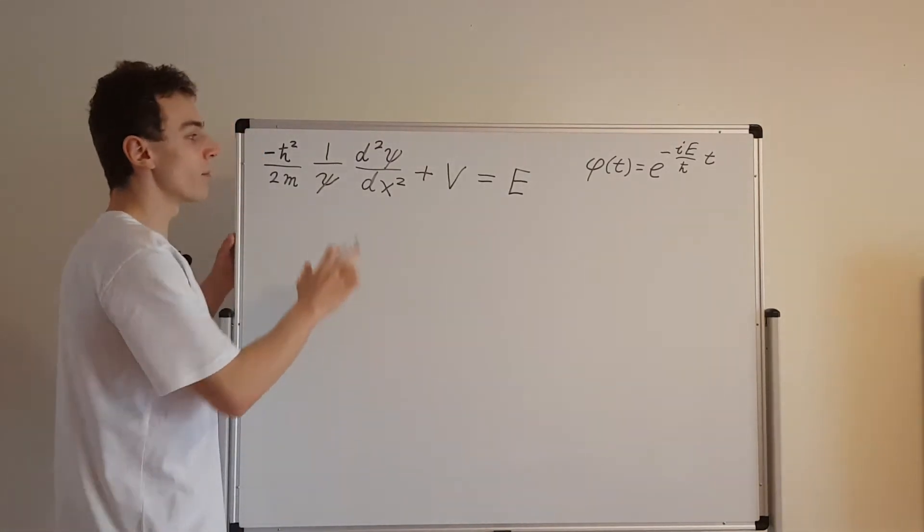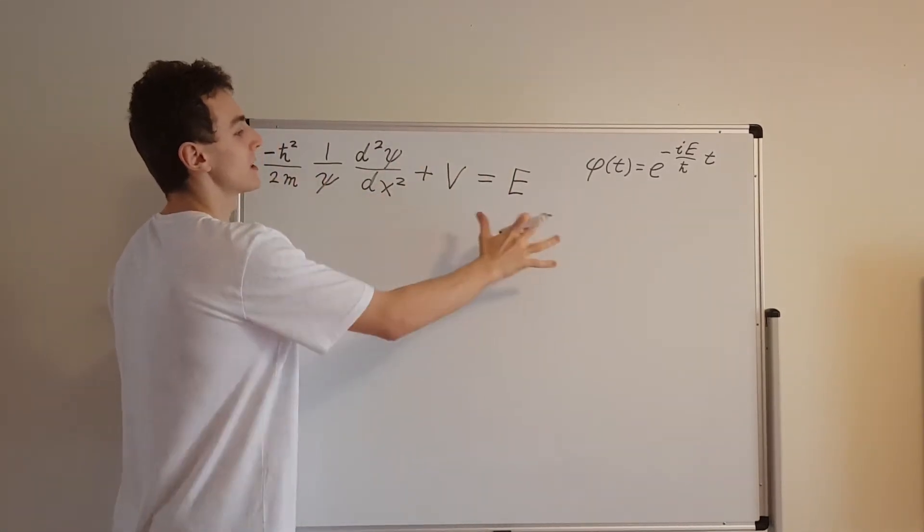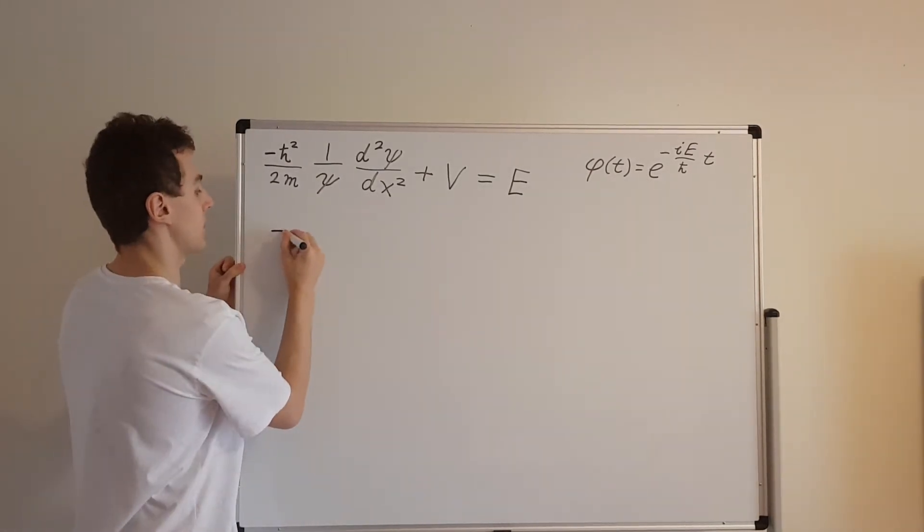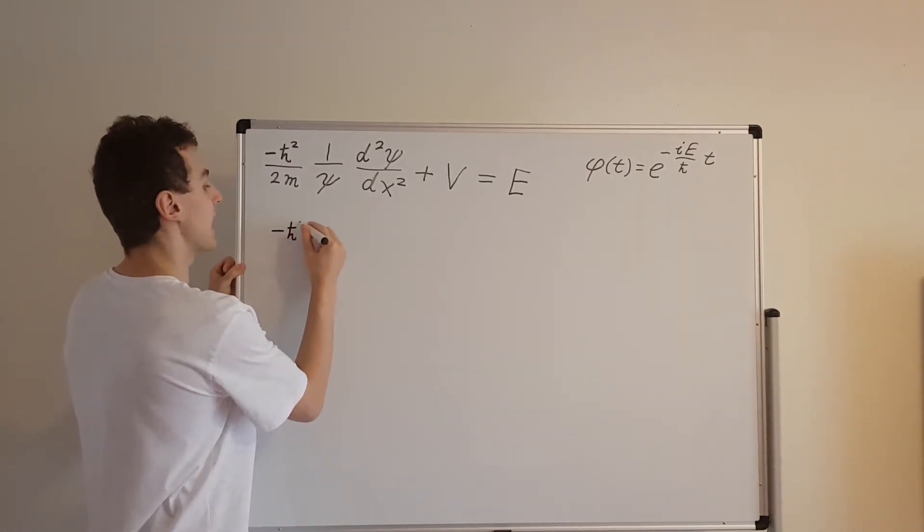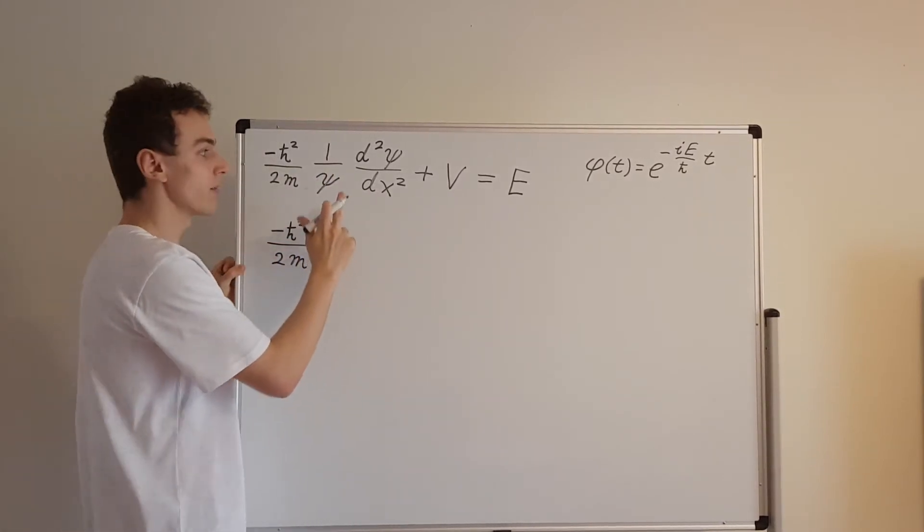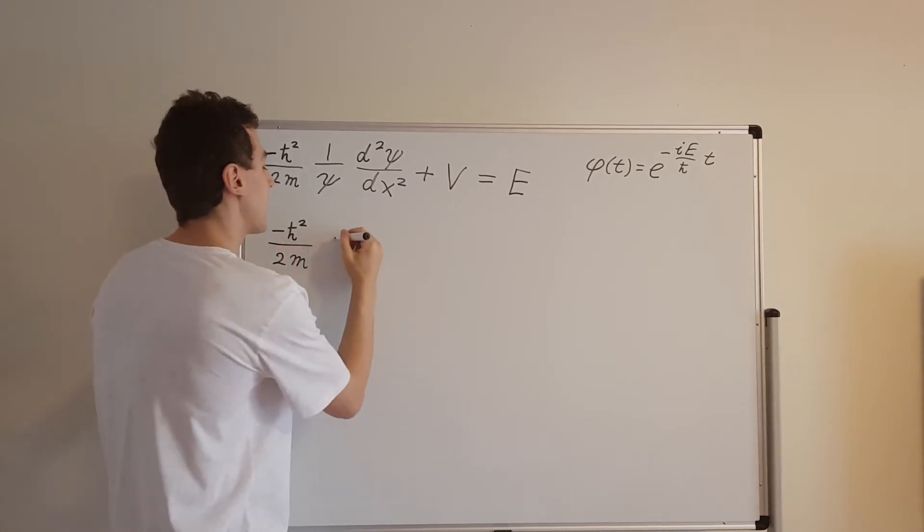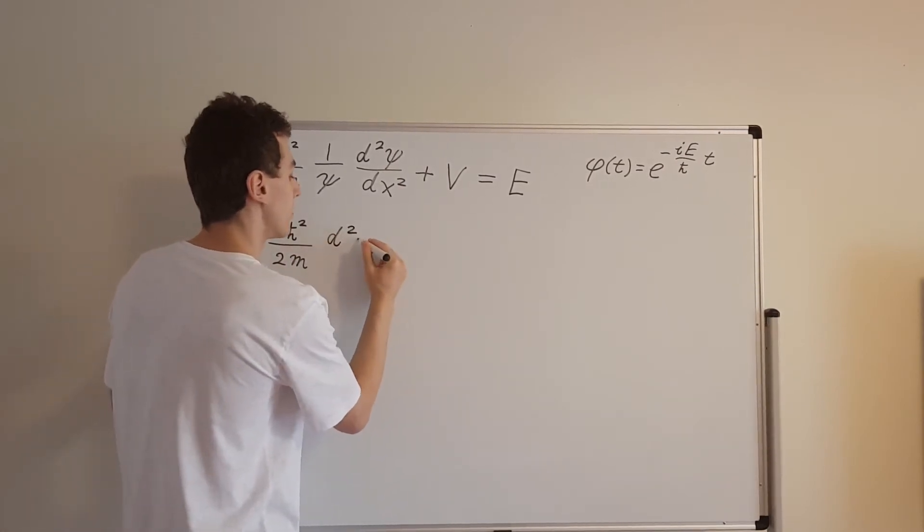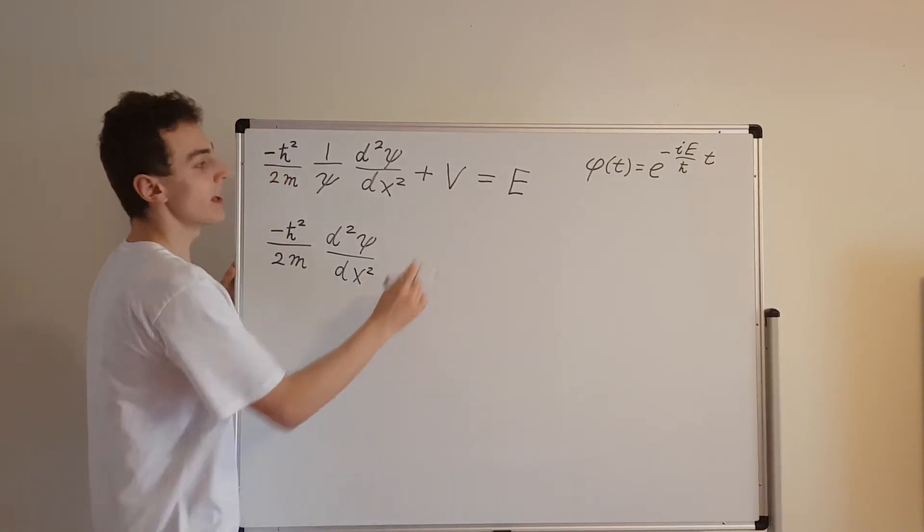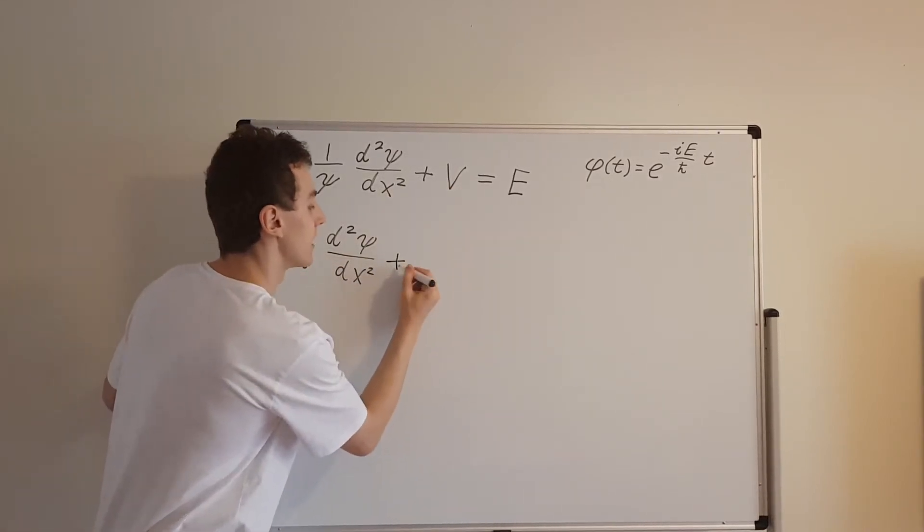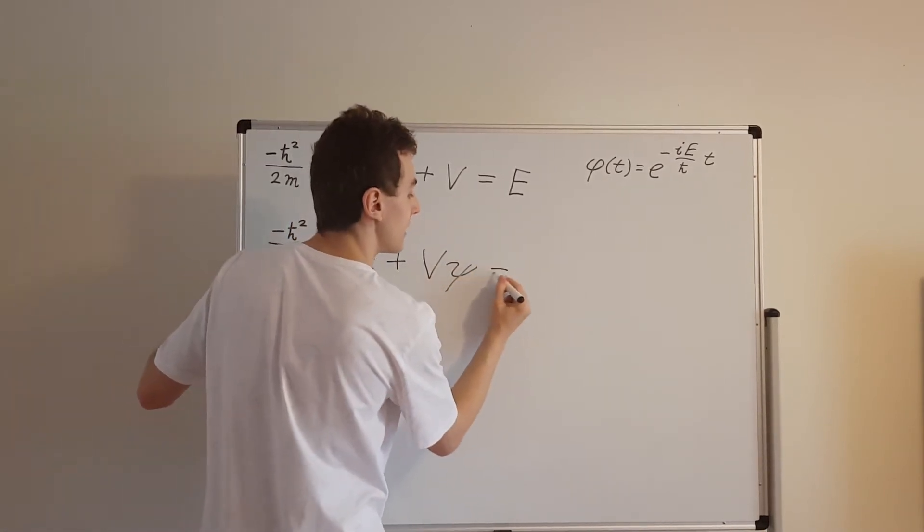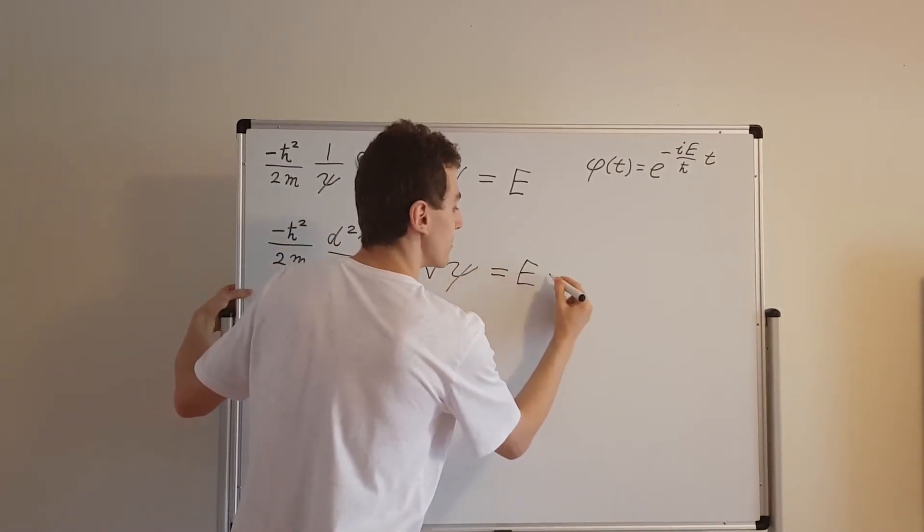Well, first of all, I'm going to multiply this whole equation by psi and turn it into a more familiar form. So if I do that, I'm going to get minus h bar squared over 2m. This is going to get cancelled out if I multiply by psi. We're going to get the second derivative of psi with respect to x. Then we're going to have V times psi and this E is going to be E times psi.